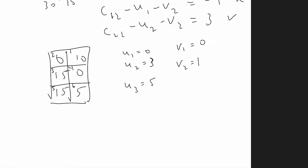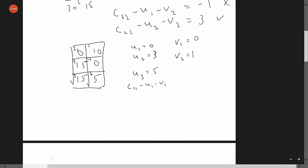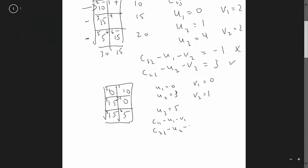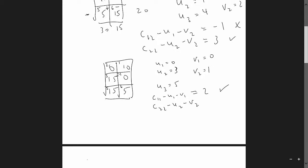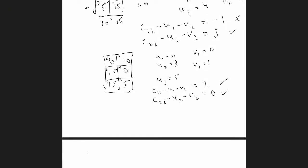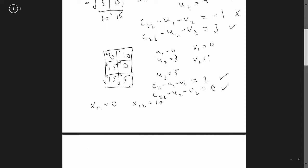Checking the optimality condition for the two non-basic boxes: C11 minus u1 minus v1 equals two minus zero minus zero, which equals two — satisfied. C22 minus u2 minus v2 equals four minus three minus one, which equals zero — also satisfied. The optimality condition is met, so we are at an optimal solution: x11=0, x12=10, x21=15, x22=0, x31=15, x32=5.